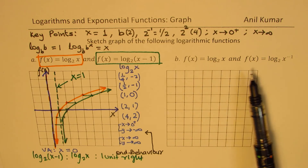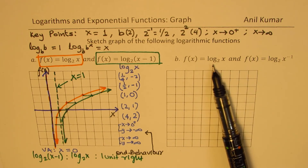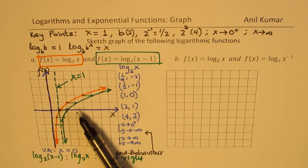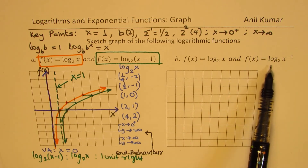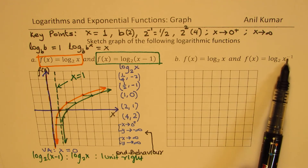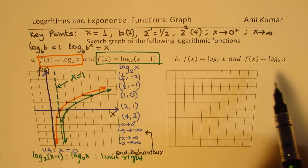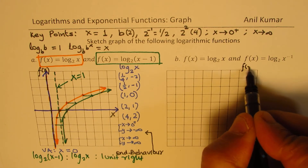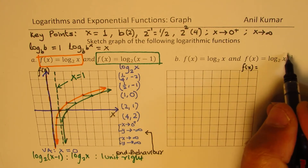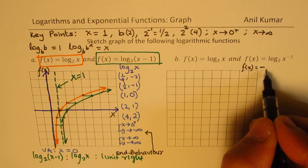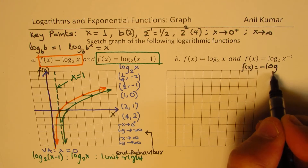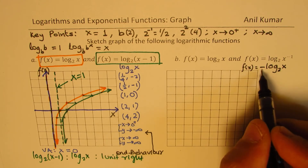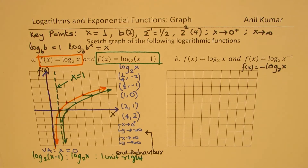Now the next function is f(x) equals log to the base 2 of x to the power of minus 1. Let me rewrite this — since minus 1 is in the power, it comes out as a coefficient, giving us minus log to the base 2 of x. So this is a reflection on the x-axis.